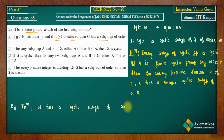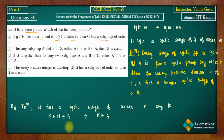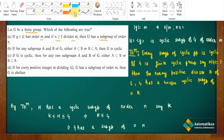Call this subgroup T. T is a subgroup of H of order n. Since H is a subgroup of G, T is also a subgroup of G of order n. So Option A is true.